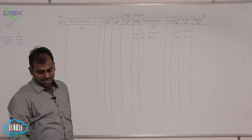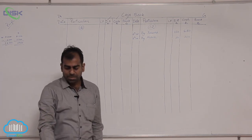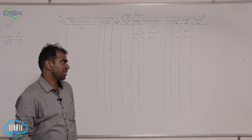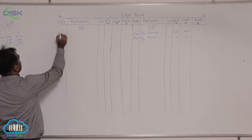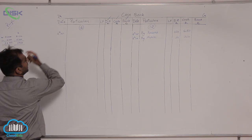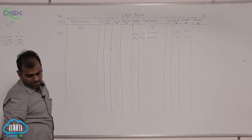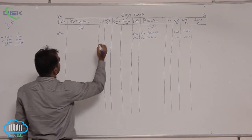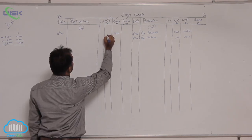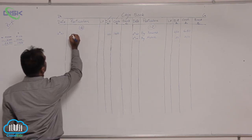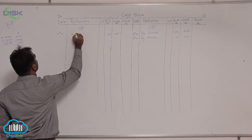Hence here we received the check from Prabhu on 10th, so on 10th I am entering in debit side, in the cash column 1450 and in discount allowed column 150, it would be to Prabhu.